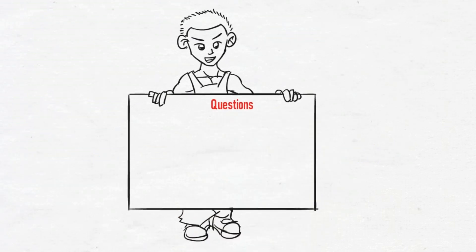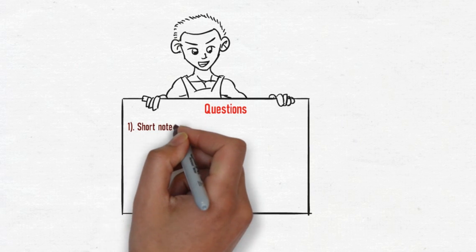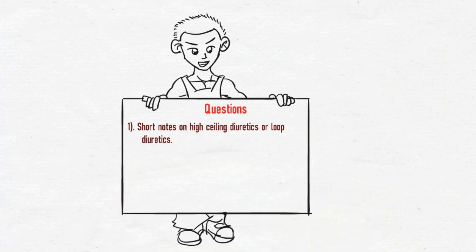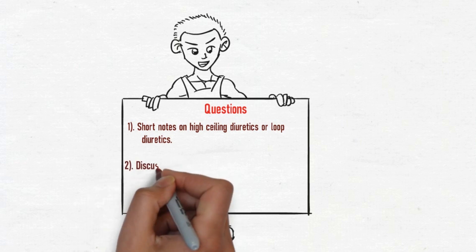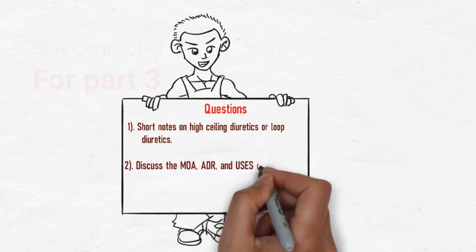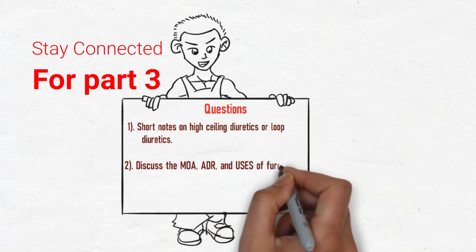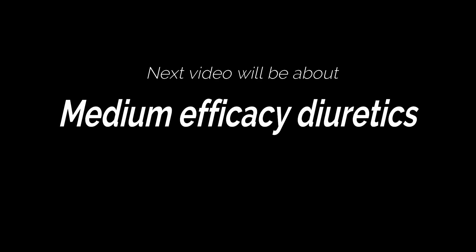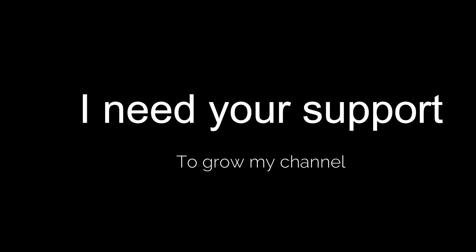Exam questions related to this topic: Number one, write short notes on high efficacy diuretics or loop diuretics. Number two, discuss the mechanism of action, adverse drug reactions, and uses of furosemide or drugs of a similar category. Stay tuned for Part 3, which is uploading soon.